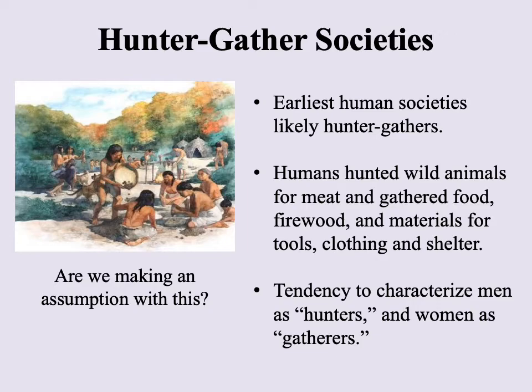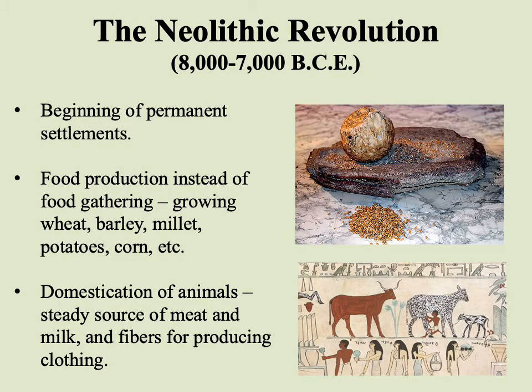The first major transformation in terms of technology is defined by the Neolithic Revolution, taking place between around 8,000–7,000 BCE, depending on the part of the world. When this transition to farming takes place in different parts of the world, it doesn't seem to be a case of one region borrowing it from another — it appears to be an independent development in every case, which makes it interesting that it's happening during roughly the same time period everywhere.